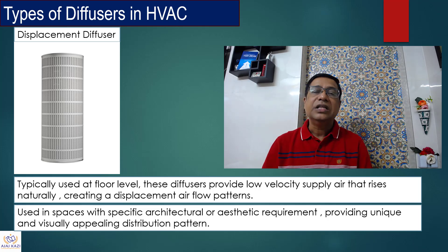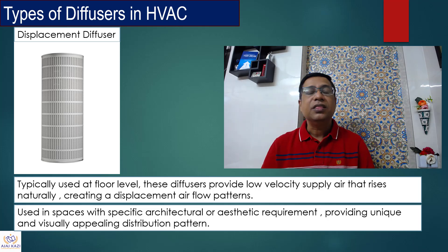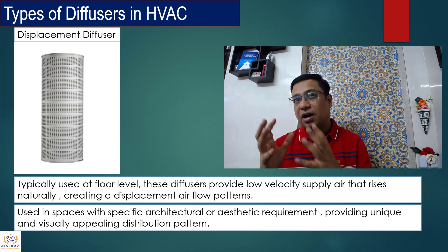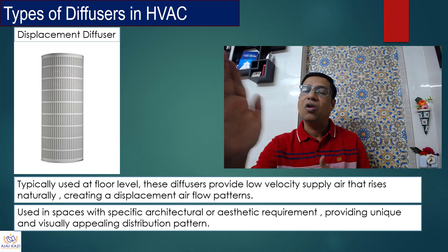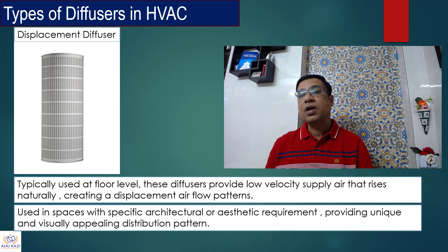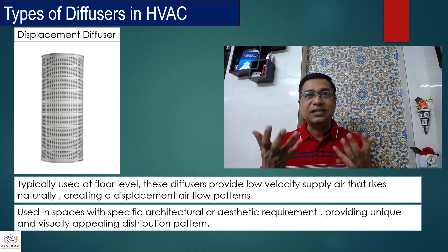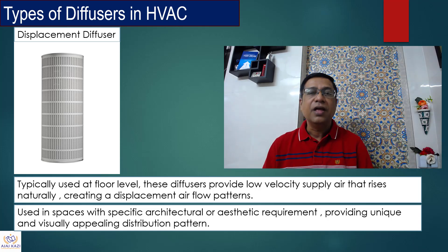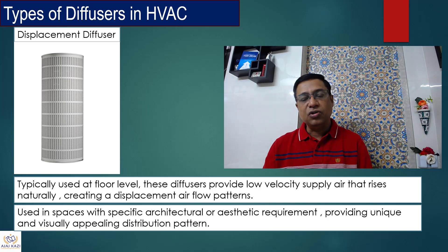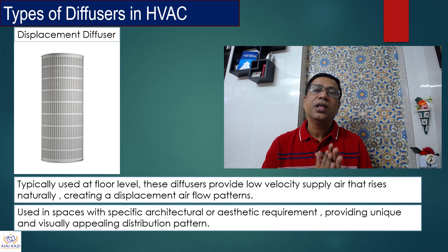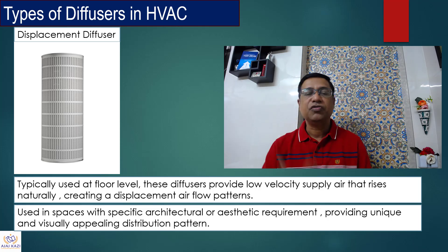This is called a displacement diffuser, and it is not that commonly used. Generally you must have seen these in airports, lobbies, or arrival and departure lounges. These are at floor level and are generally low velocity supply air risers, so you don't get a draught when you walk near these diffusers. If you put a diffuser on the floor and walk nearby, you would normally find a draft of air which is generally irritating. So these are low velocity floor type diffusers — the air rises from below and gets diffused to the area to be conditioned. This is basically an aesthetic requirement from architects, and you must have seen these in airports or large spaces where air distribution is from the floor.